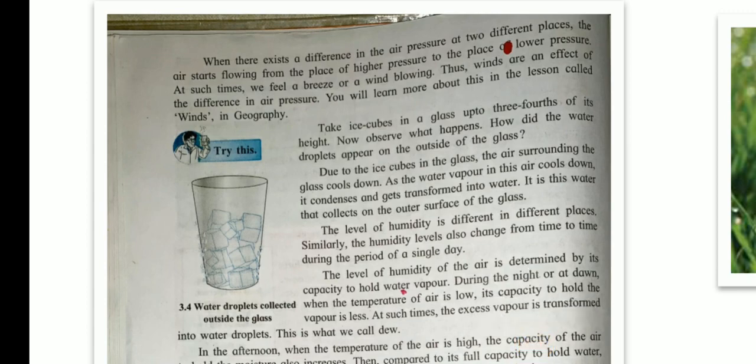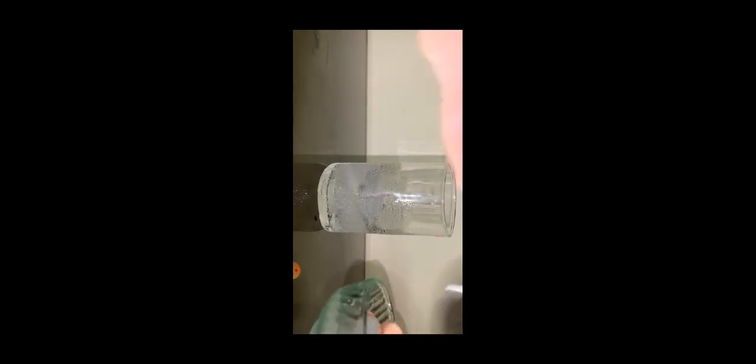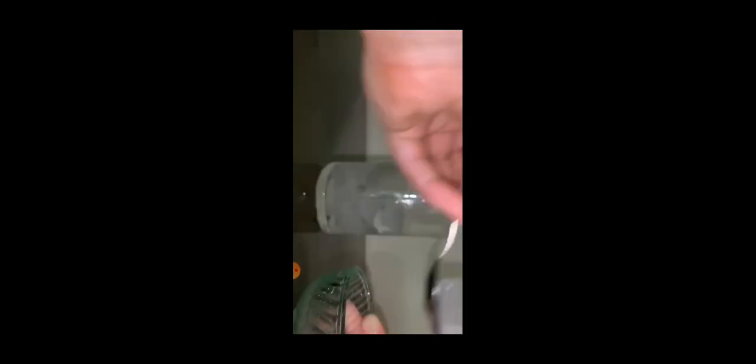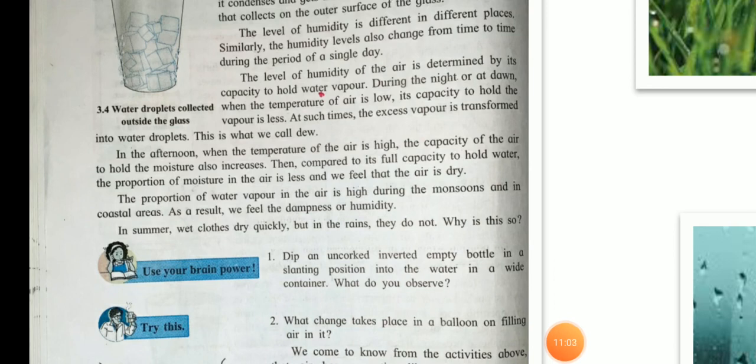Now let us see a simple experiment. Take a glass. Take some ice cubes and fill about three-fourths to half of the glass with ice cubes. How did the water droplets appear on the outside of the glass? Due to the ice cubes in the glass, the air surrounding the glass cools down. As the water vapor in this air cools down, it condenses and gets transformed into water. It is this water that collects on the outer surface of the glass.